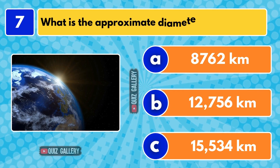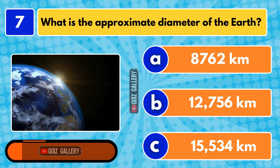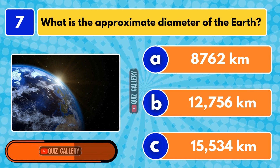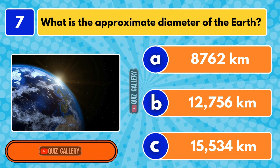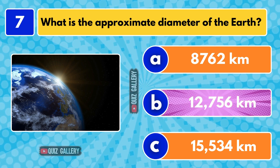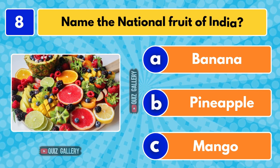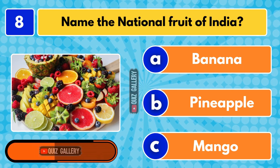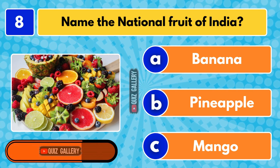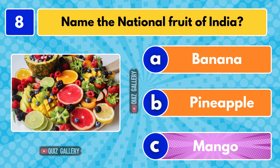What is the approximate diameter of the Earth? 12,756 kilometers. Name the national fruit of India. Mango.